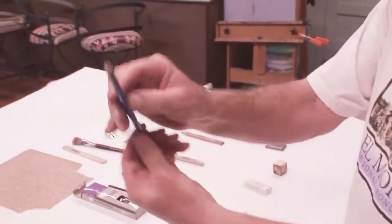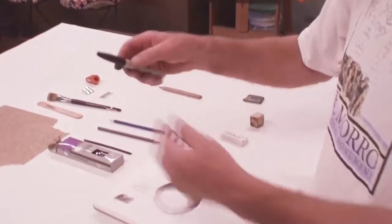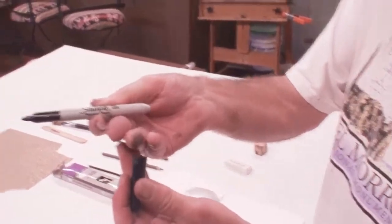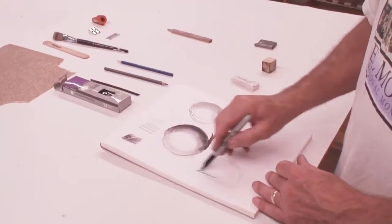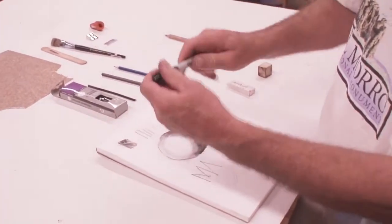Here's a number 2B pencil. It's a little harder for making small details. This is a Sharpie felt tip pen. You'll find this useful sometimes when you're doing line drawings or contour drawings.